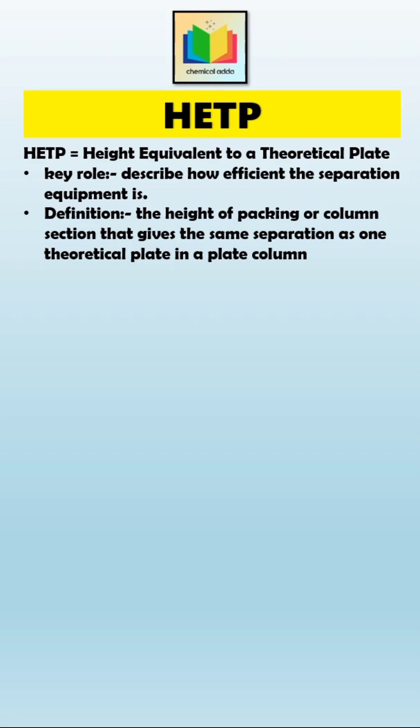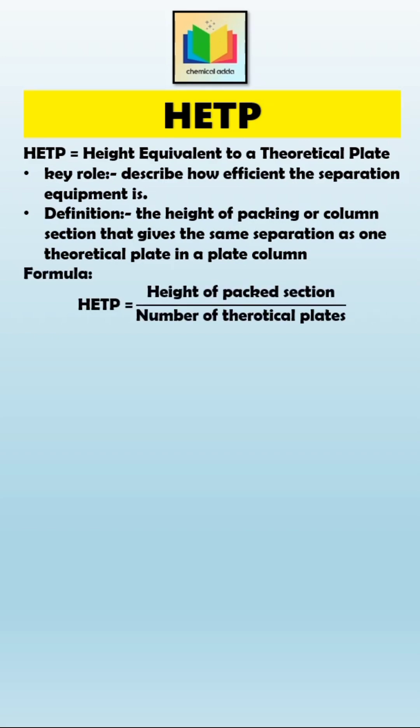On each tray, vapor and liquid reach equilibrium. But in a packed column, there are no trays. Hence, for a packed column, we use HETP to tell how much height of packing is equal to one theoretical plate. Mathematically, HETP can be calculated as: HETP equals the height of the packed section divided by the number of theoretical plates.